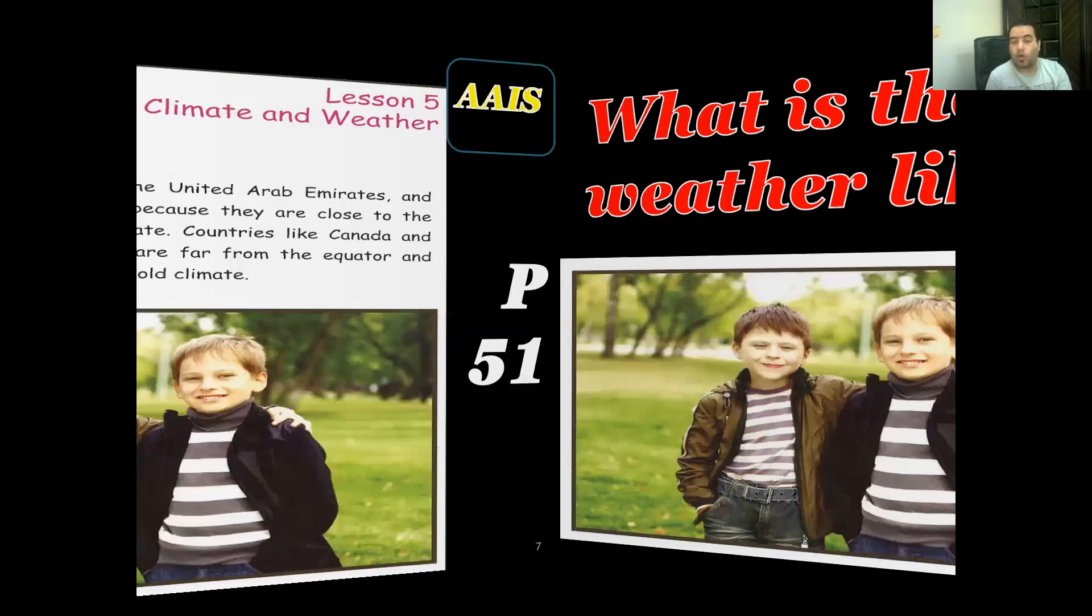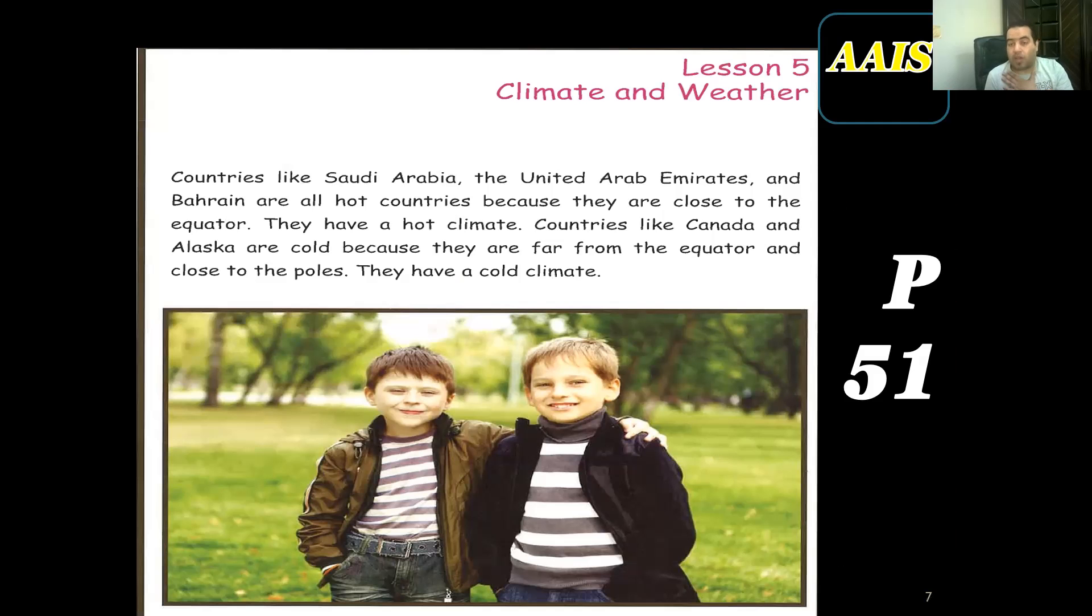Here we're talking about our lovely country, maybe the United Arab Emirates or some other countries around Saudi, and we say that they are really hot. Why is Saudi hot? Excellent, thank you so much, because it's close to the equator. While some other countries which are far away from the equator like Canada, it's really cold like those boys in this picture because they are far from the equator, so they need to wear more clothes to keep their bodies warm.